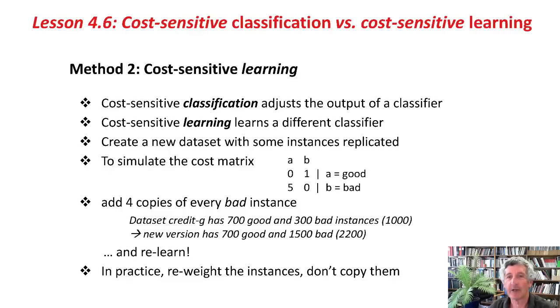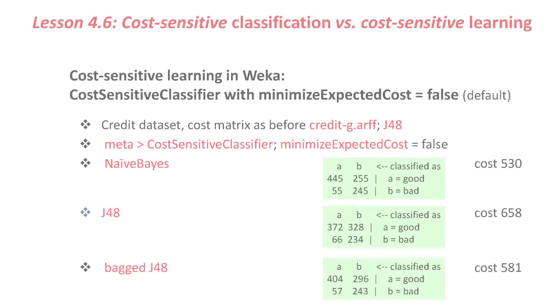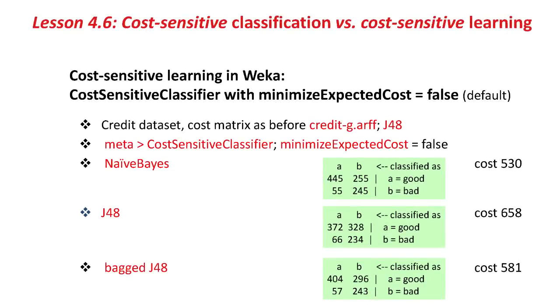In practice, we won't actually copy the instances, we'll re-weight them internally in Weka. Well, the way of doing this is to use the same classifier, cost-sensitive classifier, but set minimize expected cost to false. We had it true before, now we're going to set it to false, which is the default. We're going to try that with Naive Bayes and J48.